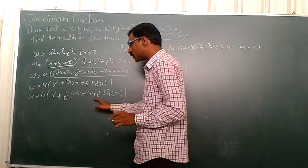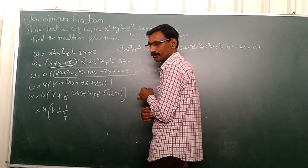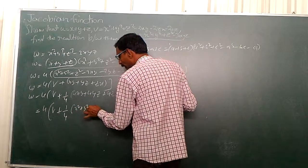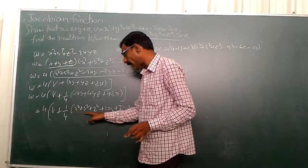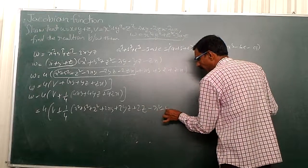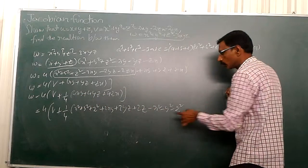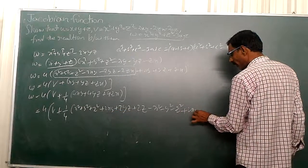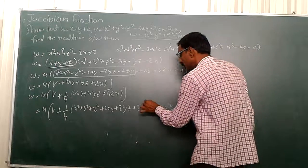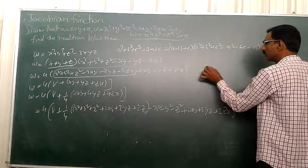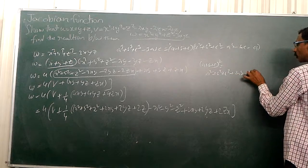Now this one I have to write like this: u into v plus 1 by 4 into x square plus y square plus z square plus 2xy plus 2yz plus 2zx. Here I added extra x square plus y square plus z square, so I have to subtract x square plus y square plus z square. After that we have 4xy here but only 2xy, so I add 2xy plus 2yz plus 2zx. This is in the form of a plus b plus c whole square equals a square plus b square plus c square plus 2ab plus 2bc plus 2ca.